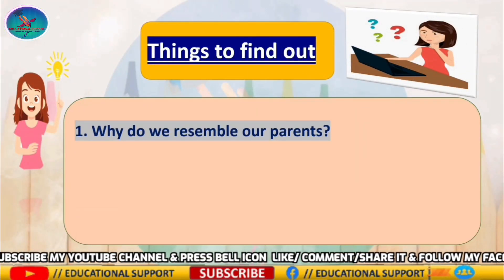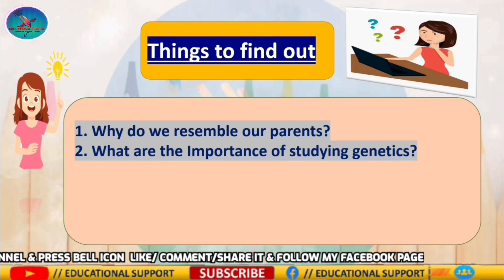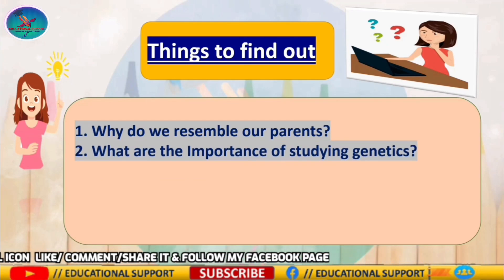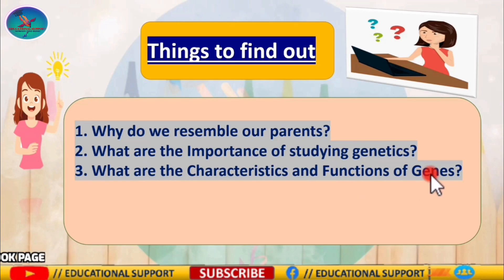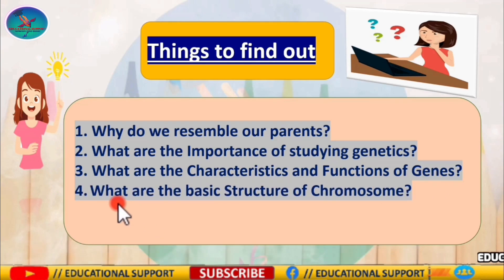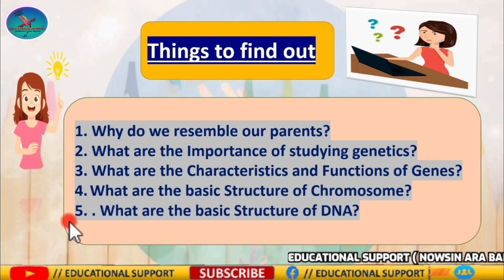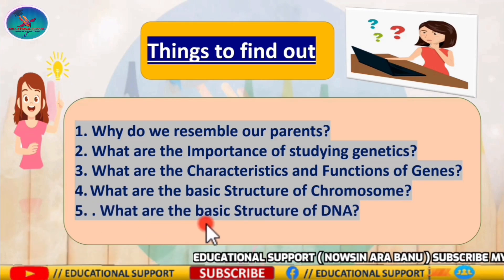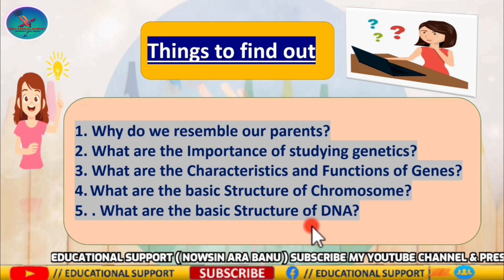Check your progress. Number one: why do we resemble our parents? Number two: what is the importance of studying genetics? Number three: what are the characteristics and functions of genes? Number four: what is the basic structure of a chromosome? Number five: what is the basic structure of DNA?